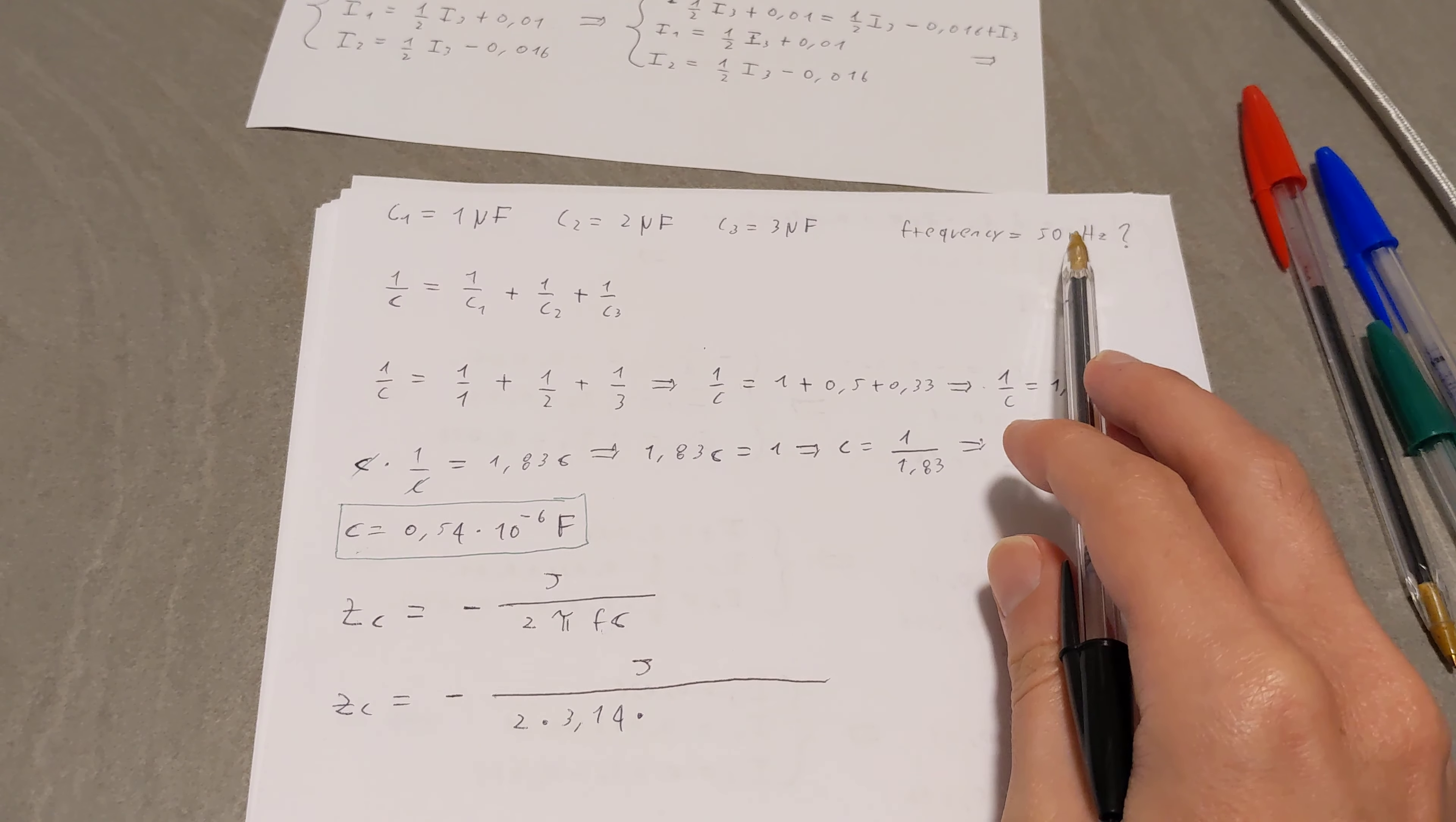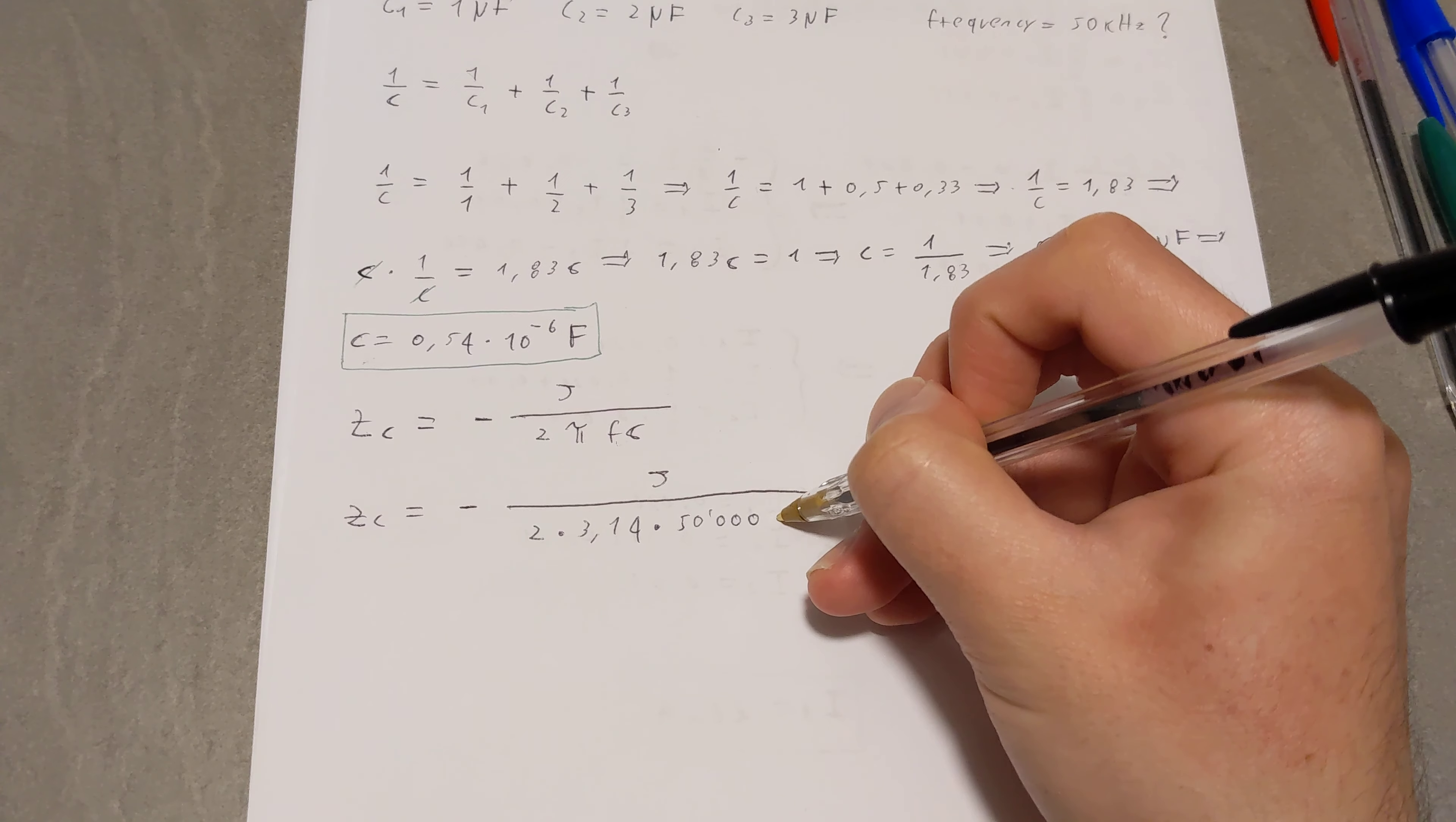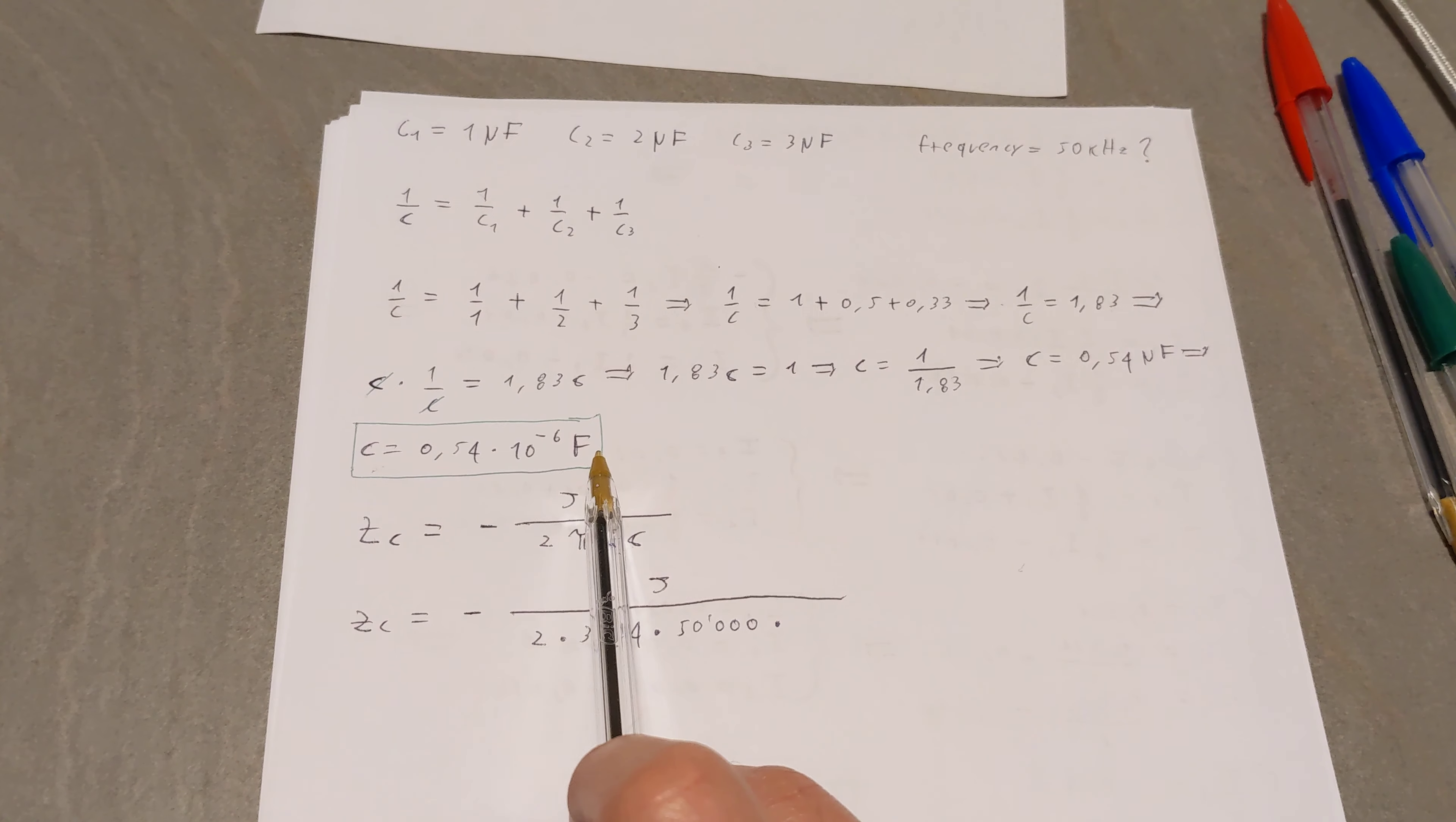So times the frequency, we said that the frequency is 50 kilohertz, so 50,000 hertz. So times 50,000 times C. Well, C is 0.54 times 10 to the negative 6 farad.